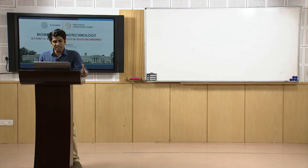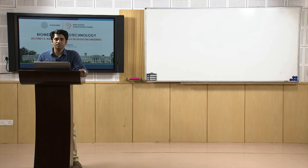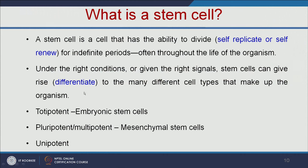Under the right conditions or given the right signals, stem cells can give rise to many different types of cells. If you induce stem cells with suitable growth factors, they can convert into liver cells or kidney cells. This process is called differentiation.